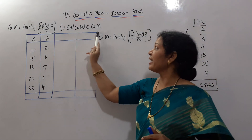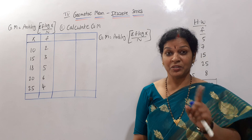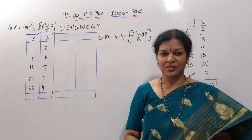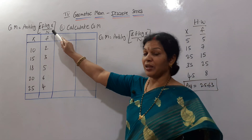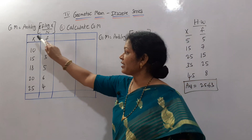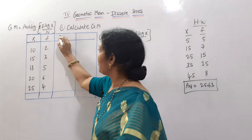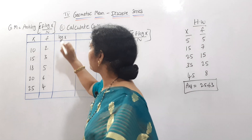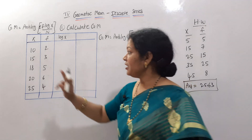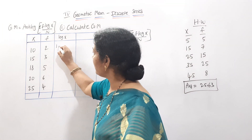Here is the problem: calculate geometric mean — x values and frequency are given. Individual series has only x; discrete series has x and frequency. As per the formula, we need f × log x. So first we find log x, then frequency × log x. We set up two columns: first column is log x, where we find the logarithm for each x value.